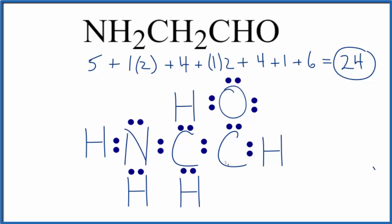We need to get this to be an octet, so we'll need to move these two here and form a double bond. So now we've satisfied the octet on all the atoms and the hydrogens have two.